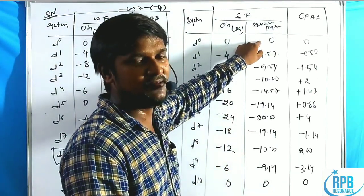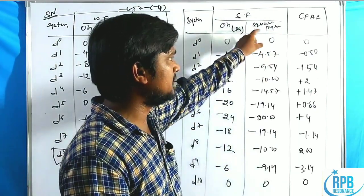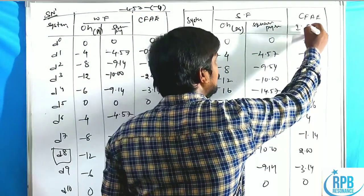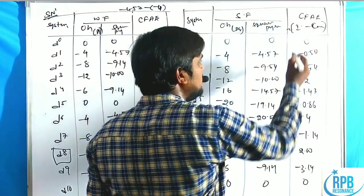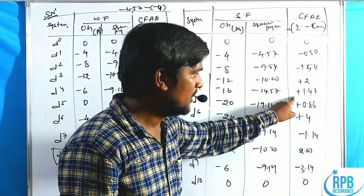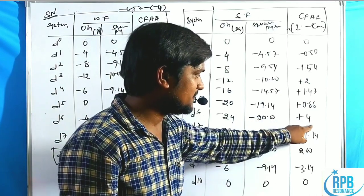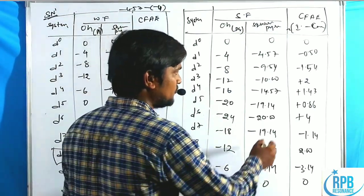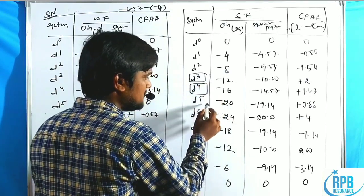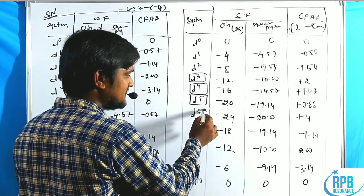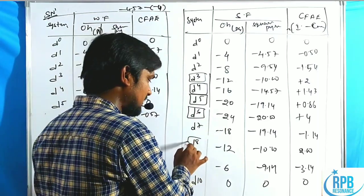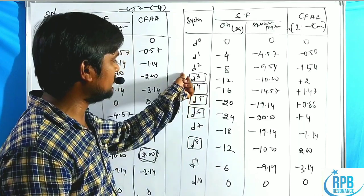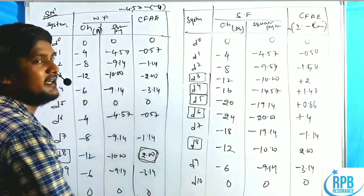The square pyramidal CFSE values for strong field are also suggested by Basolo and Pearson. Applying the CFAE formula (intermediate minus complex), we get values including: -0.50, -1.54, +2, +1.43, +0.86, +4, -1.14, -3.14. Among these, the positive values are: D3 is positive, D4 is positive, D5 is positive, D6 is positive, D8 is positive.